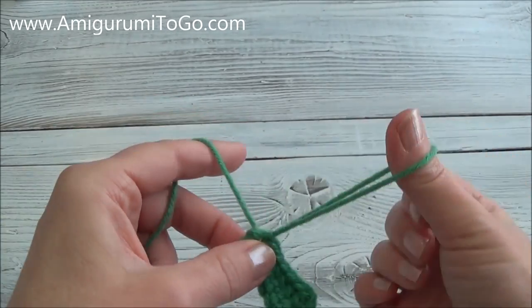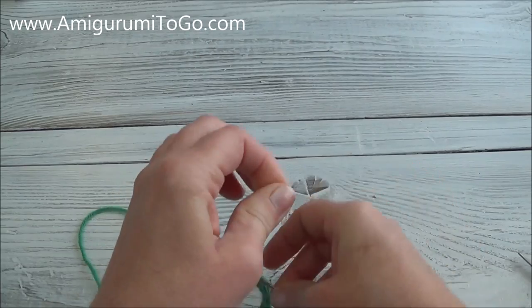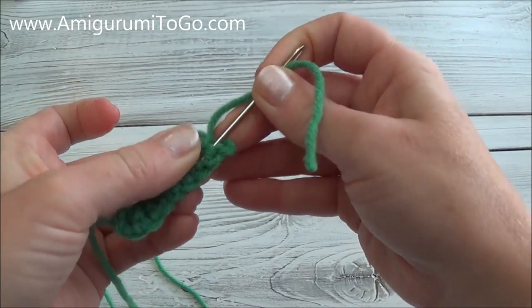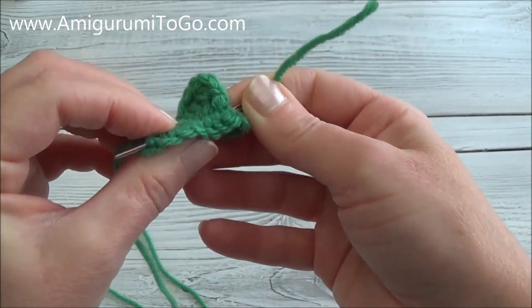Go through, pull yarn through. Instead of yarning over, just pull the first loop through the second loop and we are done. Finish off leaving a tail yarn tail for sewing. We're going to weave in the starting yarn tail to hide it. Just bring it right through. I go right through a row of stitches and out the other side.